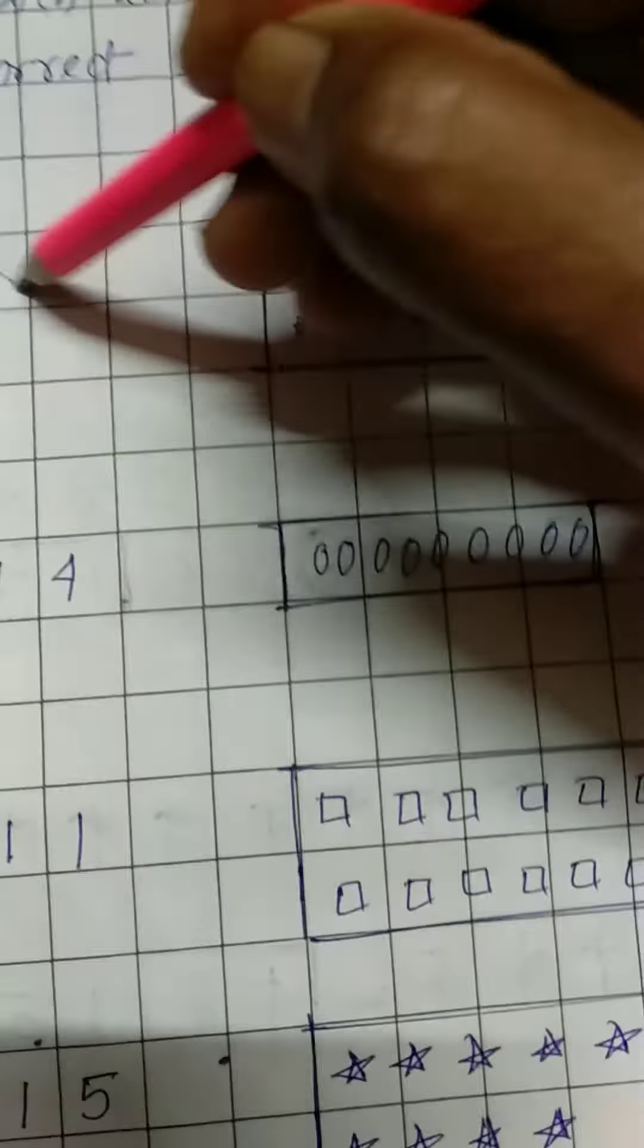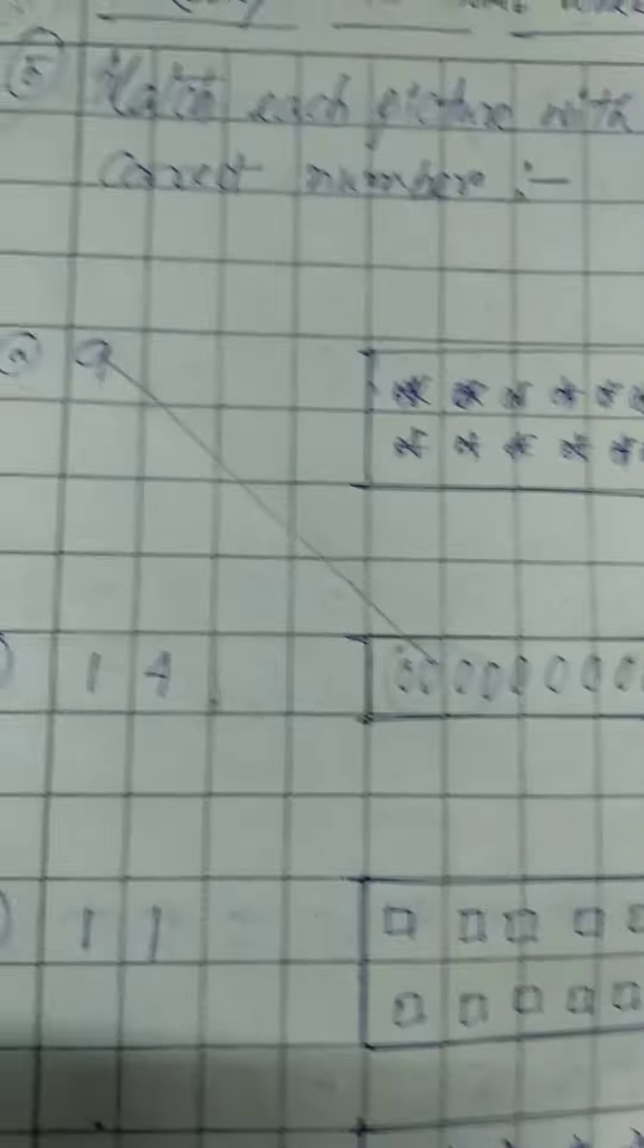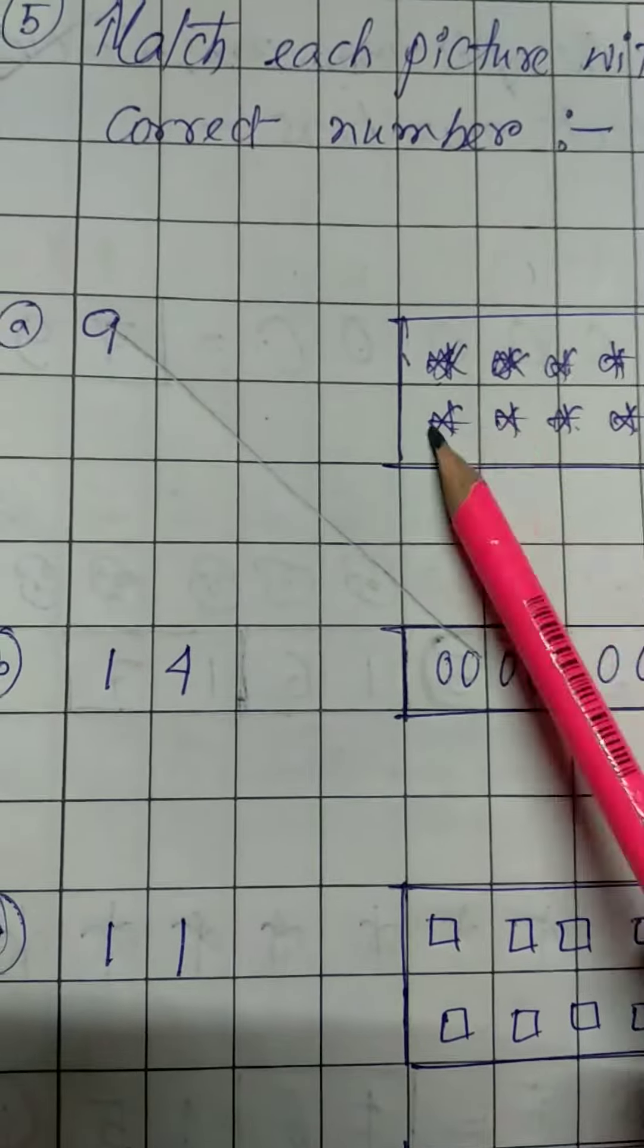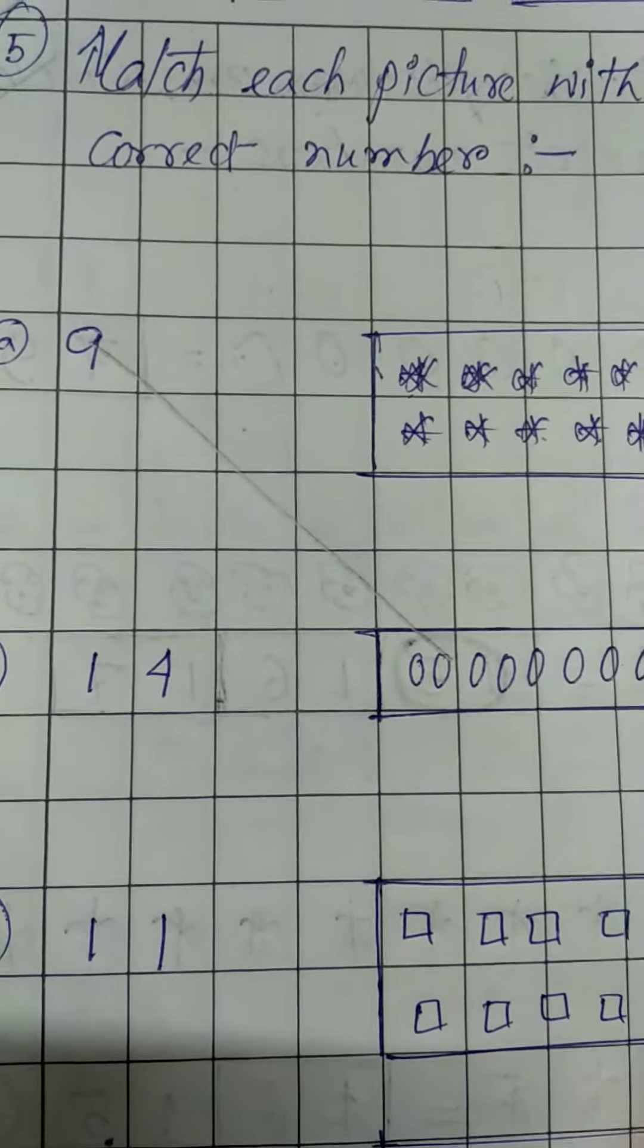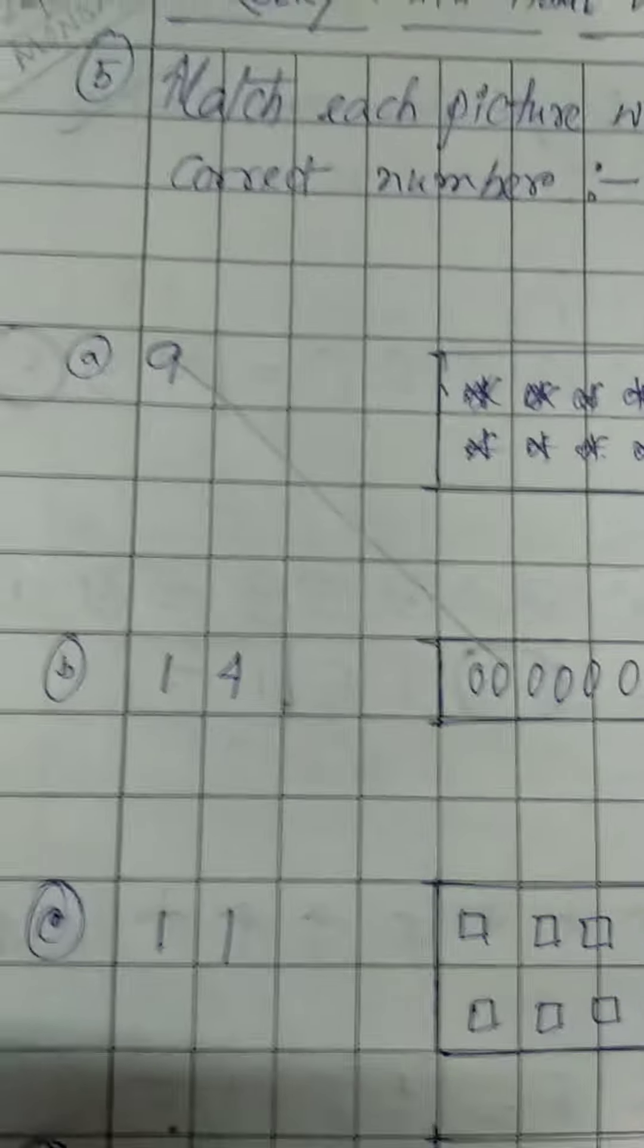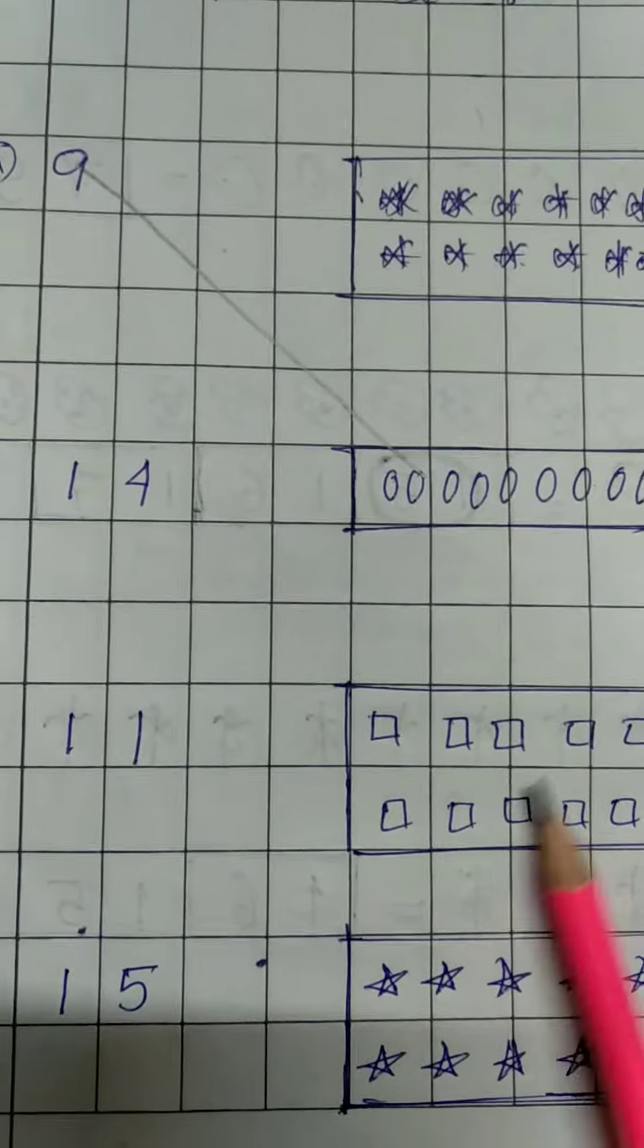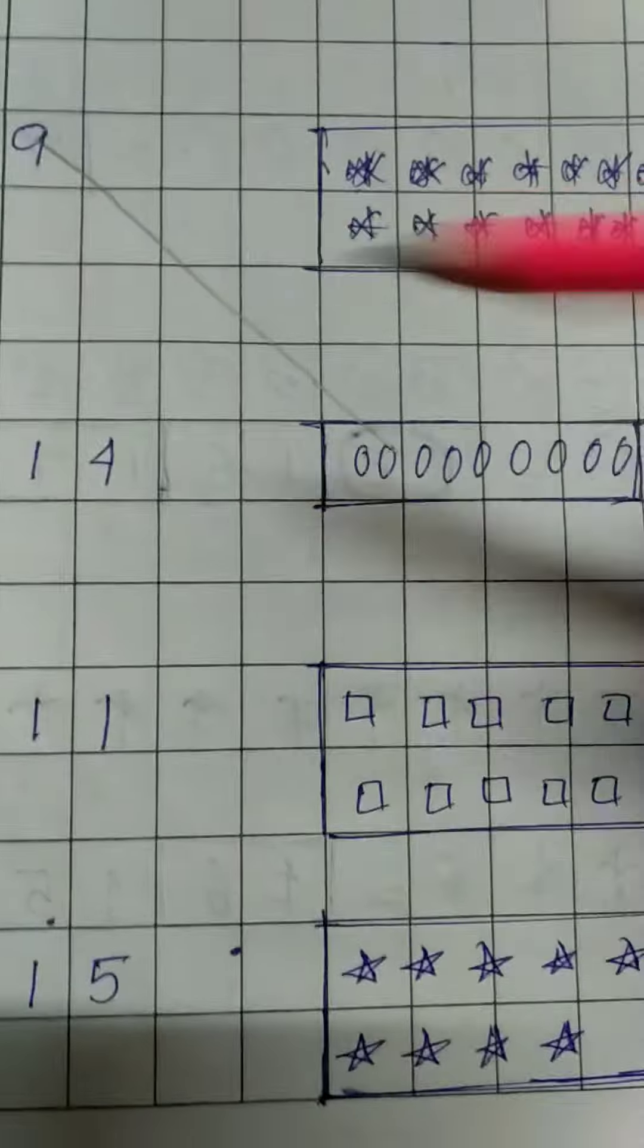Now next one is 14, so count 1, 2, 3, 4, 5, 6, 7, 8, 9, 10, 11, 12, 13, 14, 15. Here is 15, no. You have to count 14. 1, 2, 3, 4, 5, 6, 7, 8, 9, 10, 11, 12, 13, 14. Here is 14, so you have to match 14.